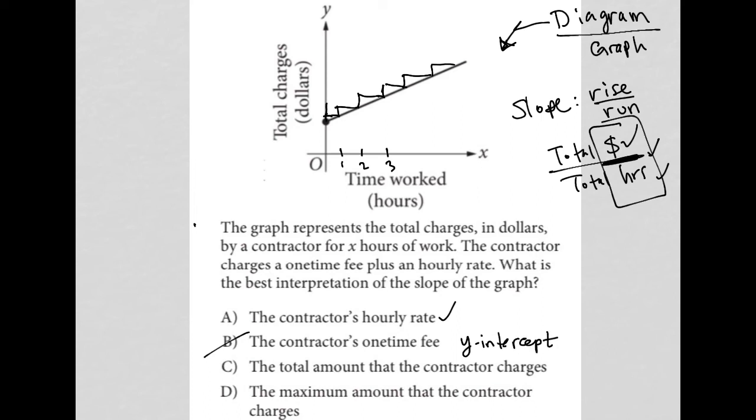Choice C, the total amount that the contractor charges. Well, that's not true either because there's no way to know that by looking at the graph. The slope doesn't tell us how many hours the contractor works, so we don't know how much he or she charges in total. And lastly, the maximum amount the contractor charges - again, for the same reasons. C is no good. D is also no good. So choice A is the best answer here.